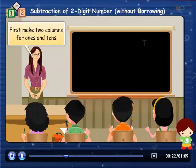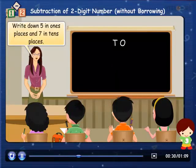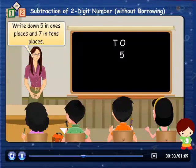First make two columns for ones and tens. Now consider the bigger number first. Write down 5 in ones places and 7 in tens places.